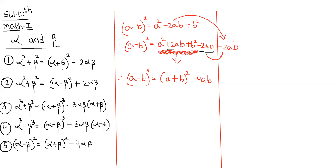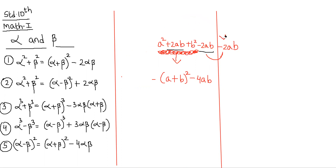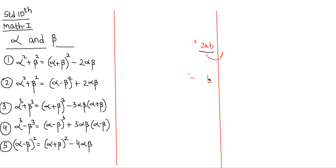These are the five identities based on alpha and beta which will help us solve problems in the chapter on quadratic equations. Now let us start with exercise 2.5. But before we start, there is one more topic to be studied: the relationship between alpha, beta and the coefficients of the quadratic equation.